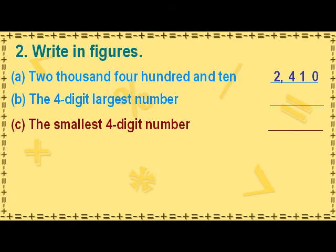The largest 4-digit number has 9 in the thousands place, 9 in the hundreds place, 9 in the tens place, and 9 in the ones place. It is read as 9999.